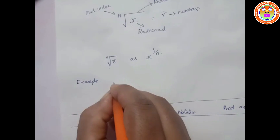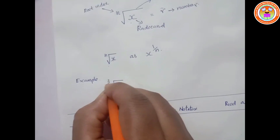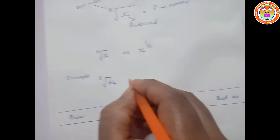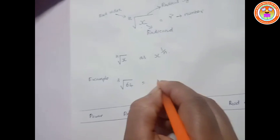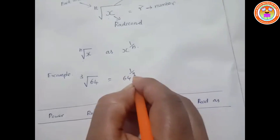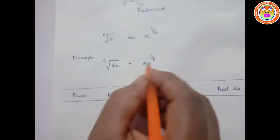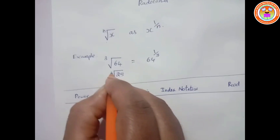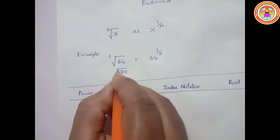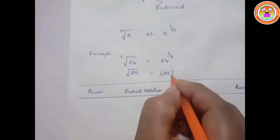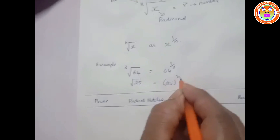For example, if you take the cube root of 64, you put 64 here and instead of 3 you put 1 by 3. Similarly, for root 25, this is root 2, so you can write 25 to the power of 1 by 2.